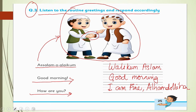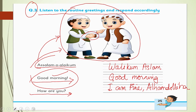Jab bhi kisi se milein, to sabse pehle unko salaam karein. Din ka jo bhi hissa ho, us par unko khushamadeed kahein. Good morning — morning ka time ho to morning kahein; dopahar ka time ho to noon kahein; shaam ho to afternoon ya evening keh sakte hain; aur sone se pehle Good night keh sakte hain. Lekin sabse pehle salaam karna aur salaam ka jawaab dena Sunnat-e-Muhammadi hai.